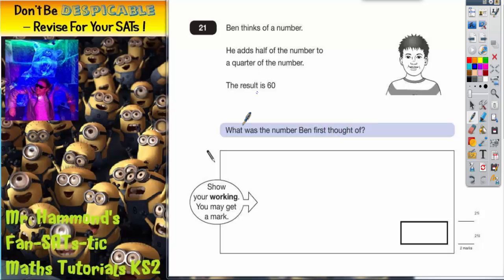Well we're talking halves and quarters, so let's draw a circle to help us. He's got half of his number and then he's got a quarter of his number.